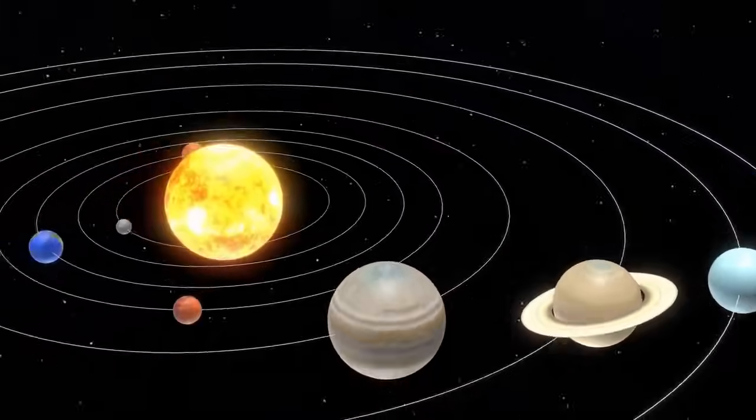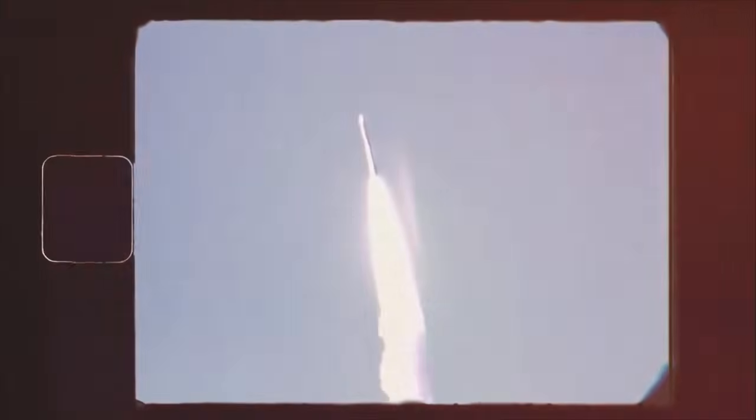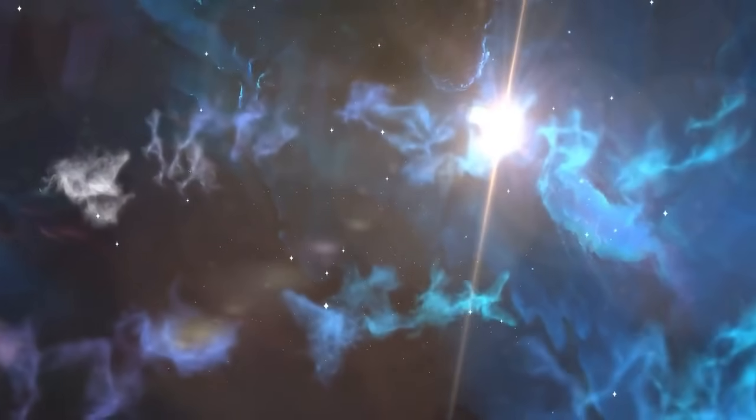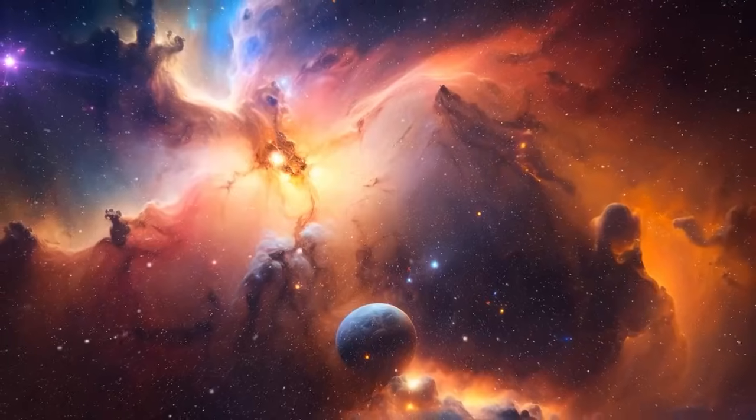The Voyager missions capitalized on a rare planetary alignment that occurs once every 107 years, allowing the spacecraft to perform gravitational slingshots from one planet to another, conserving their limited fuel. Despite launching second, Voyager 1 was the first to reach Jupiter and Saturn.